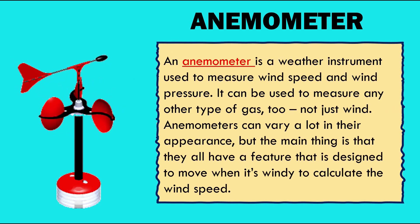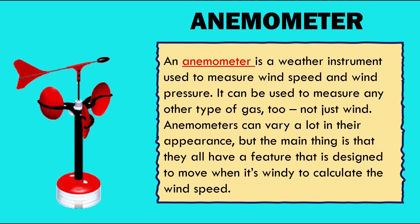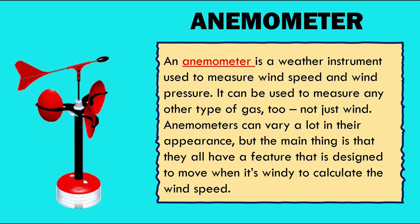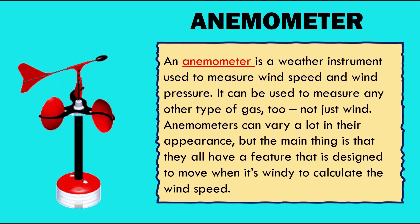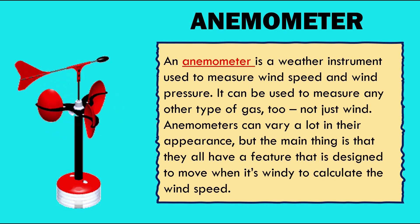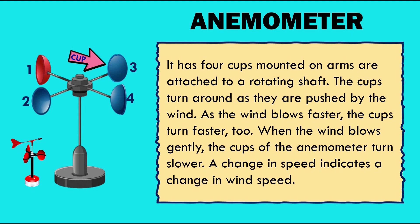What is an anemometer? An anemometer is a weather instrument used to measure wind speed and wind pressure. It can also be used to measure any other type of gust, not just wind. Anemometers can vary a lot in their appearance, but they all have a feature designed to move when it's windy to calculate the wind speed. It has four cups mounted on arms or attached to a rotating shaft. The cups turn around as they are pushed by the wind. As the wind blows faster, the cups turn faster too. When the wind blows gently, the cups turn slower. A change in speed indicates a change in wind speed.